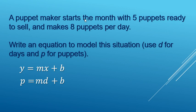M is still the slope or the rate. In this case, it's eight puppets per day, so that goes there. And then the B, that's your y-intercept or your start amount, that's gonna be five.